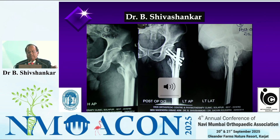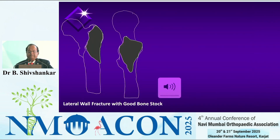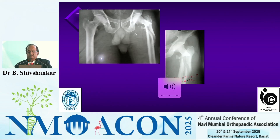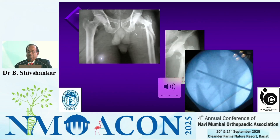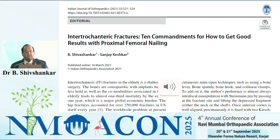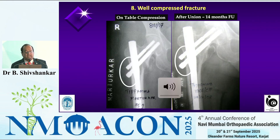For a large fragment, a screw can do the job. Myself and Dr. Gadegone have published this. If there is a large fragment, you can fix it with a screw. Another fracture with a large fragment — I fixed it with a percutaneous screw then went on to do a PFN; the fracture went on to unite very well. I have published this in an article. In the Ten Commandments, the eighth commandment is: the fracture needs to be compressed.